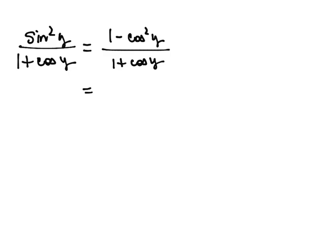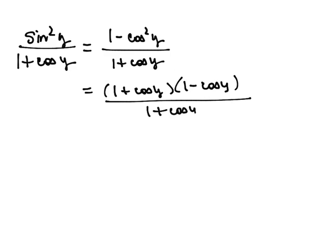And then 1 minus cosine squared is a difference of squares. So that will factor into 1 plus the cosine of y times 1 minus the cosine of y all divided by 1 plus the cosine of y.